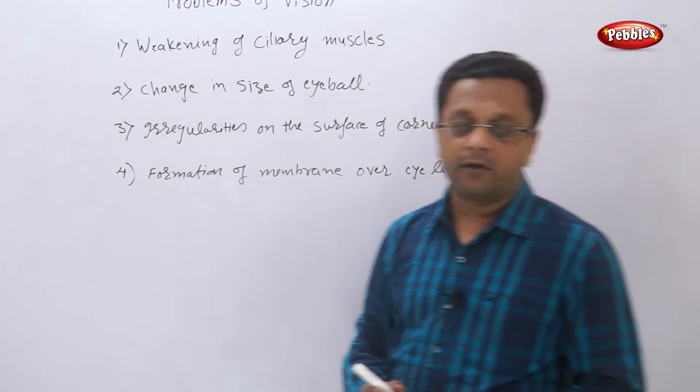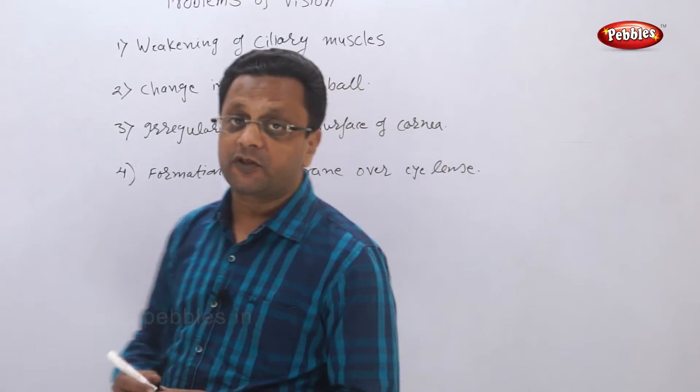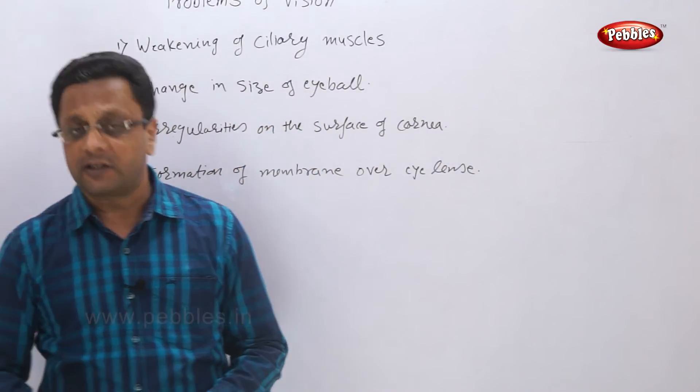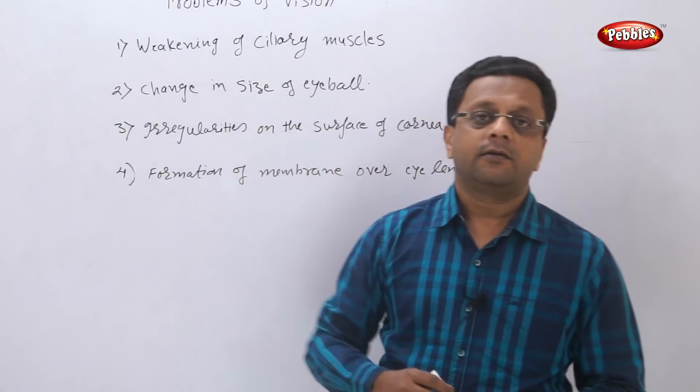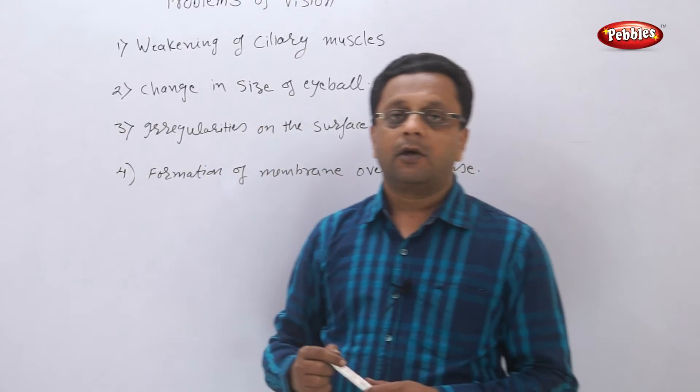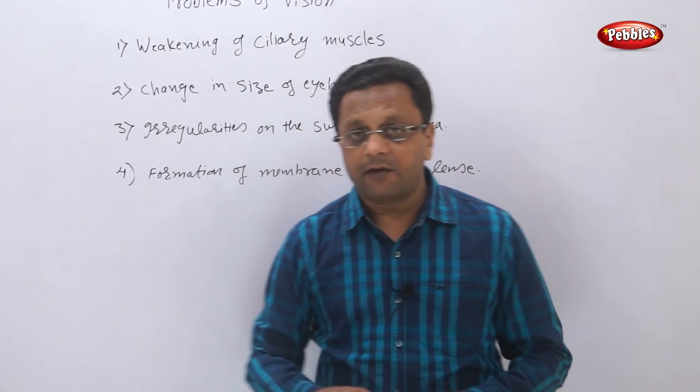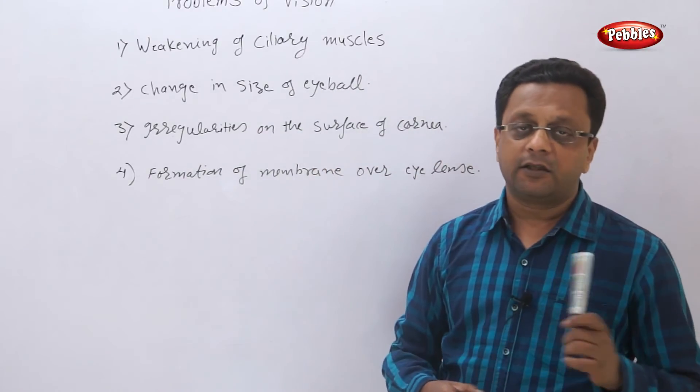The second is the change in size of eyeball. We know that the eyeball is spherical with around 2.3 cm diameter. If that eyeball is elongated or something else happens, the image cannot form exactly on the retina, and then this problem may arise.